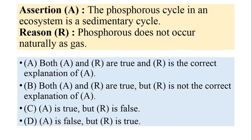Now there is an assertion-reason question. The assertion says that the phosphorus cycle in an ecosystem is a sedimentary cycle. Sedimentary cycles involve minerals available inside rocks. The rocks will be weathered — they will break down into small particles — and the nutrients present in rocks will be dispersed and transferred to different places by wind, water, or other media. Sedimentary cycles are mostly related to weathering, whereas biogeochemical cycles in gaseous state include carbon and oxygen cycles. The assertion that the phosphorus cycle is a sedimentary cycle is true.